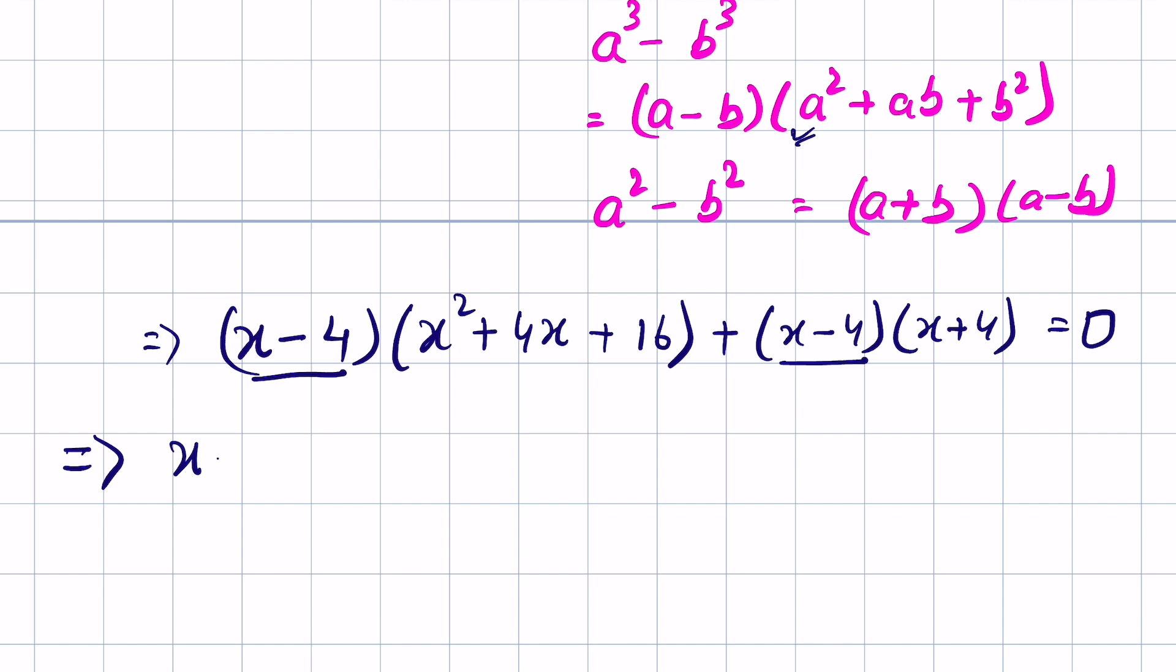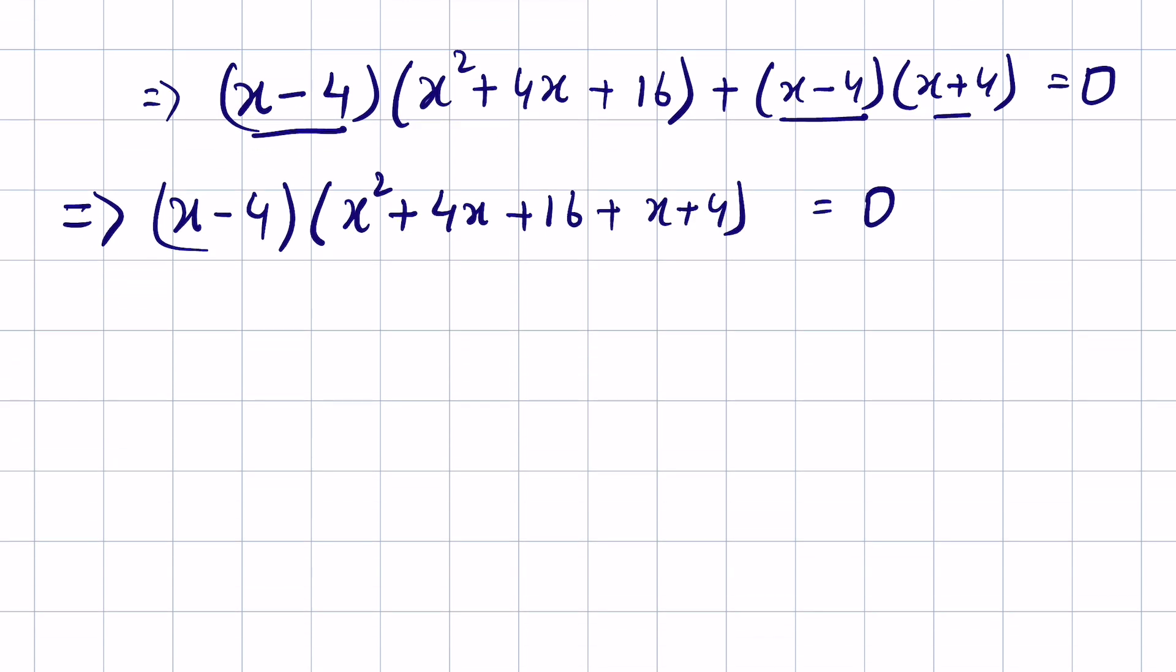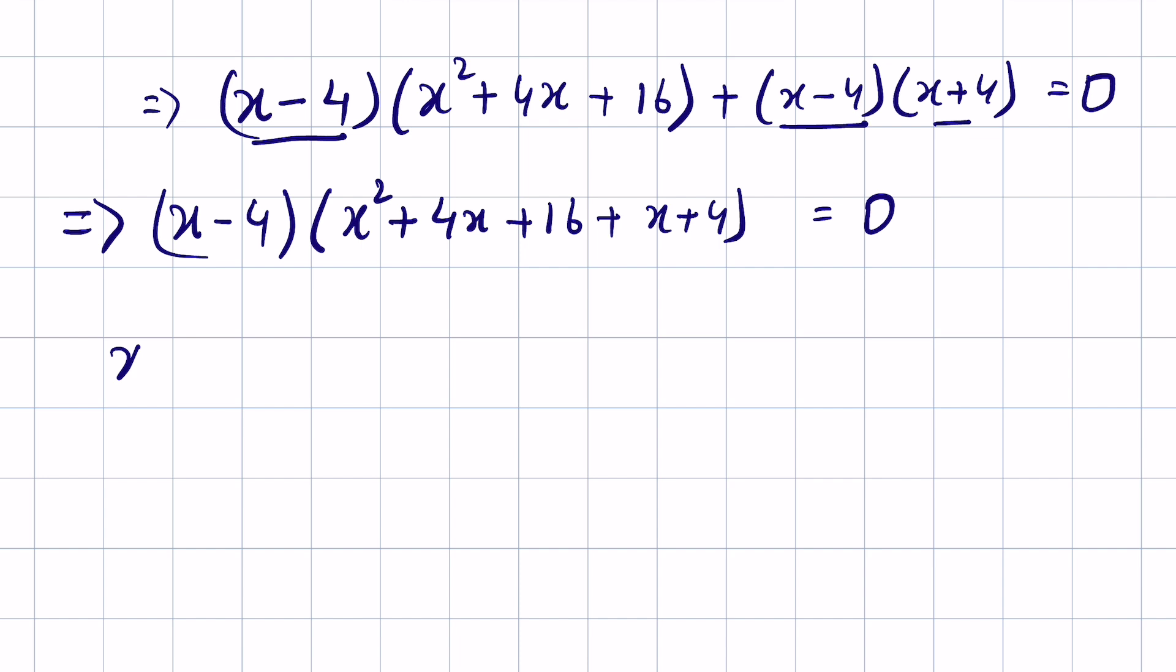So (x - 4)(x² + 4x + 16 + x + 4) = 0, which simplifies to (x - 4)(x² + 5x + 20) = 0. We have two cases: when x - 4 = 0, then x = 4.